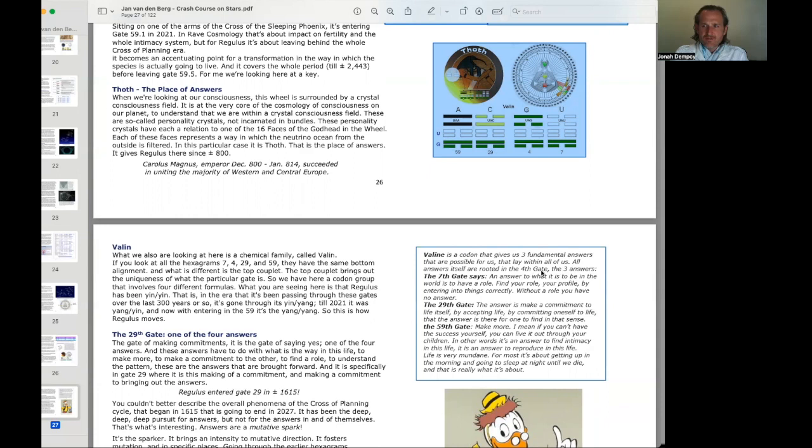Valine is a codon that gives us three fundamental answers that are possible for us that lay within all of us. All answers are rooted in the fourth gate. The seventh gate says, an answer to what it is to be in the world is to have a role. Find your role by entering into things correctly. Without a role, you have no answer. The 29th gate, the answer is to make a commitment to life itself by accepting life. And then the 59th gate, the answer is make more. If you can't have the success yourself, you can live it out through your children. It's an answer to find intimacy in this life. Life is very mundane.